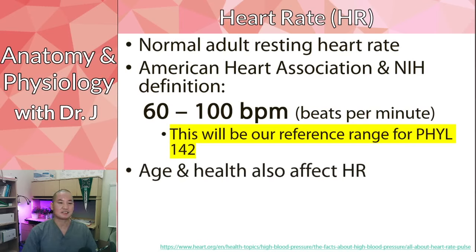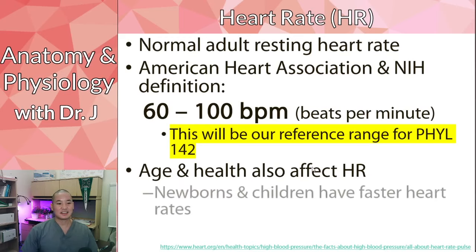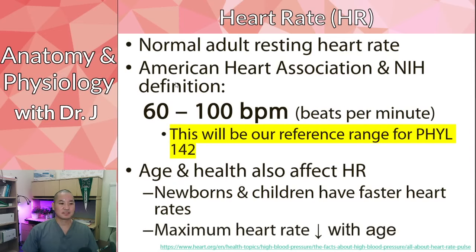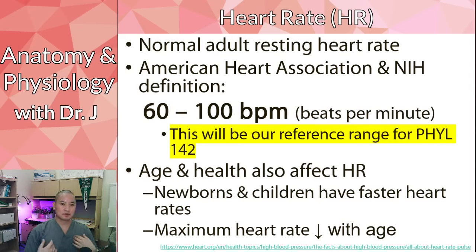Age and health also affect heart rates. When we have a newborn baby, they typically have a faster heart rate. Children and babies have faster heart rates than adults. As we get older, it's still around 60 to 100, but the maximum heart rate decreases with age. If you exercise, you can boost up your heart rate, but as we age, that ability for the heart rate to increase declines.